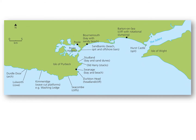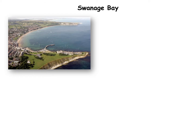This is the Dorset coast area we're concentrating on, and we're going to look at four landforms: Sandbanks, an example of a spit; Old Harry, an example of a stack; Swanage Bay; and over to the west, the arch at Durdle Door. Without further ado, let's start with our first one: Swanage Bay.